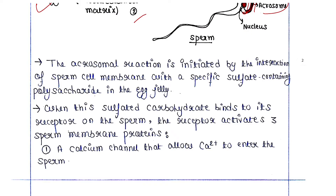The acrosomal reaction is initiated by the interaction of the sperm cell membrane with a specific sulfate-containing polysaccharide in the egg jelly. When this sulfated carbohydrate binds to its receptor on the sperm, the receptor activates three sperm membrane proteins. The first is a calcium channel that allows calcium to enter the sperm.